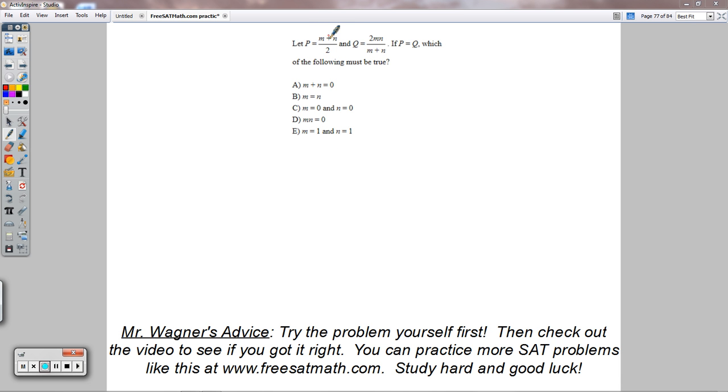let P equal M plus N over 2, or divided by 2, and Q equal 2MN divided by the quantity M plus N. If P equals Q, which of the following must be true?